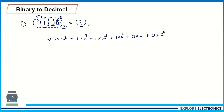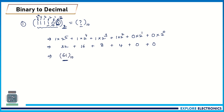This is how we write a binary number in terms of its decimal equivalent — it is just multiplication and addition. 1 into 2 power 5 is 32, plus 1 into 2 power 4 is 16, plus 1 into 2 power 3 is 8, plus 1 into 2 power 2 is 4, plus 0 into 2 power 1 is 0, plus 0 into 2 power 0 is 0. Adding all these gives 60, which is the decimal equivalent for the given binary number. This is the method to convert binary to decimal.